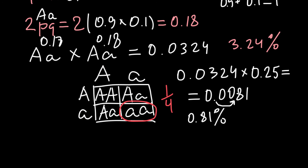So two heterozygous people marrying accounts for about 0.81 percent, and approximately one fifth would be accounted for by something else — for example, new mutations. This is also an unrealistically high number, but the purpose of this problem was to show you the logic of how such problems have to be solved if you encounter them on your exam.